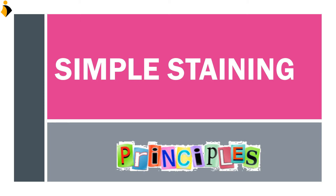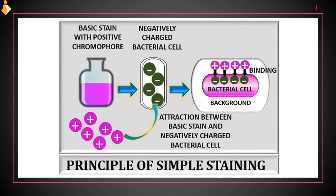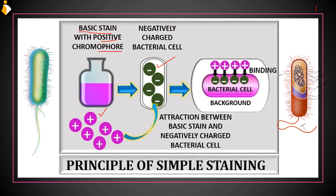Let's start with the principle of simple staining. Simple staining's basic principle is the interaction of positive and negative charges. Cell organelles are negatively charged, as you can see here. We have taken the example of a basic stain with a positive chromophore. In basic stain, positive charges are present which interact with negative charges. If the bacteria is colored, it can be positive staining. If the background is colored, it can be negative staining.